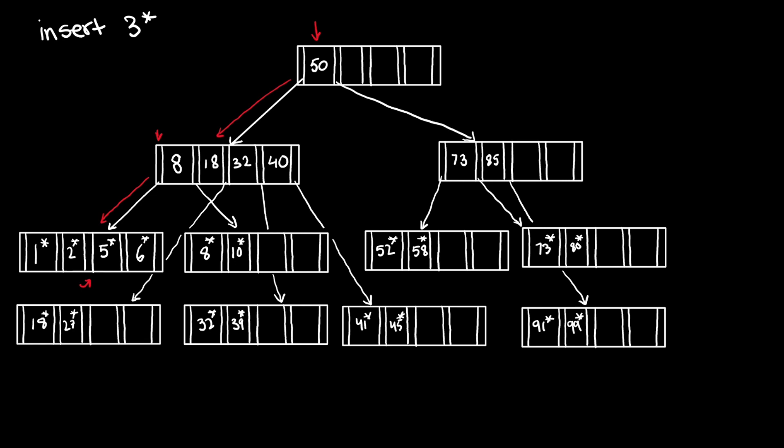There is space in the right entry, so we can move 6 into that entry to make space for 3.